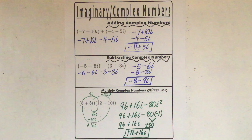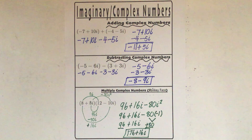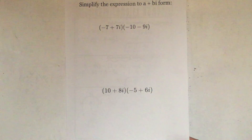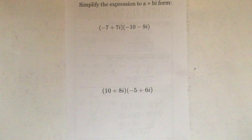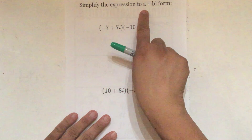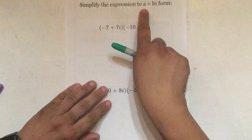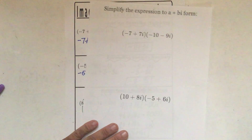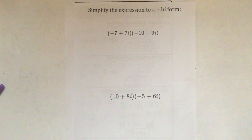Every single one of these problems multiplying complex numbers is going to be the same exact steps. So let's take a look at some examples on Delta Math. It's going to say simplify the expression to a plus bi form, which you guys are already familiar with — the a represents a number by itself and plus a number i, just like the example here: 176 plus 16i.